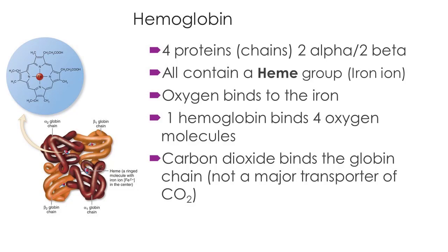The iron transports oxygen. Carbon dioxide, however, is not efficiently transported by hemoglobin — only about 15% of the carbon dioxide transported in your blood is bound to the protein, the globin chain. The rest is converted into carbonic acid and then becomes a bicarbonate ion dissolved in the plasma. So hemoglobin really transports oxygen — that's its almost singular purpose. We'll cover CO2 transport more in the respiratory system chapter.